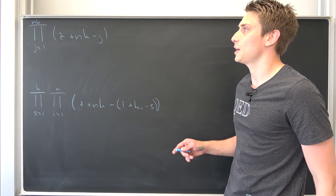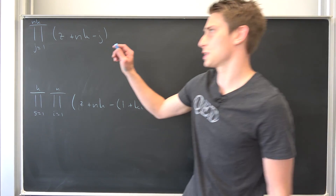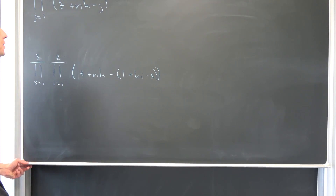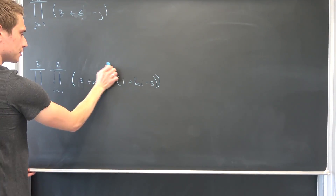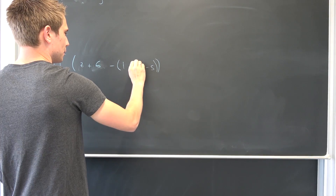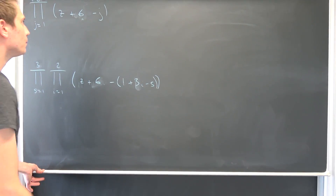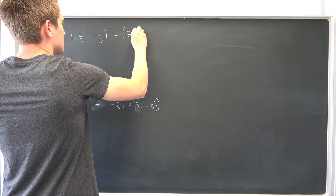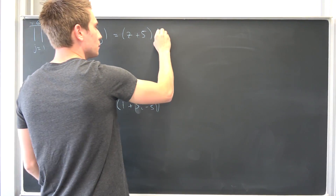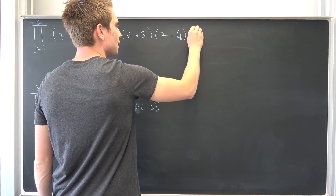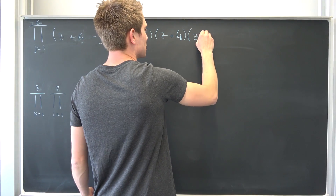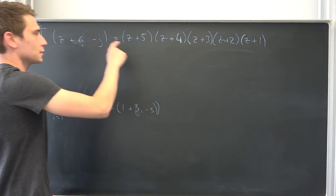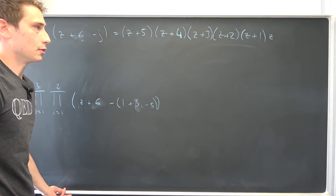We are going to take a look at examples. I'd like to make n and k different, so let's say n is 2 and k is 3, meaning our product is 6. So the single product runs up until 6 — n times k is 6 — and k is 3. Starting with the single product: plugging in j equal 1 gives z plus 6 minus 1, which is z plus 5. Then z plus 4, z plus 3, z plus 2, z plus 1, and j equal 6 gives z. So the single product is z times z plus 1 times z plus 2 times z plus 3 times z plus 4 times z plus 5. That's the easiest part.